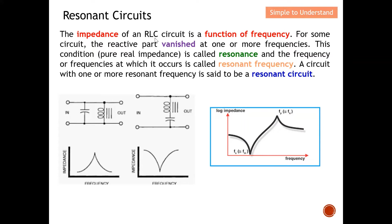The impedance of an RLC — resistor, inductor, and capacitor — circuit is a function of frequency. You can see from the graph here: this is impedance versus frequency. The impedance changes with frequency. Over here you can see this is a parallel resonator, and this is a series resonator — both are functions of frequency.